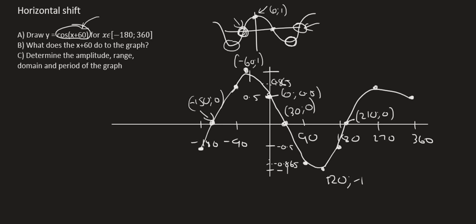Now B, question B, what does the x plus 60 do to the graph? Well, when you have any type of equation that has x plus something, it's actually going to shift the graph. So that's going to shift the graph 60 degrees left.